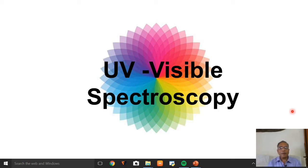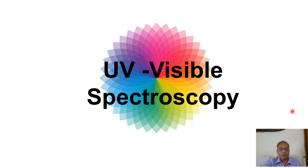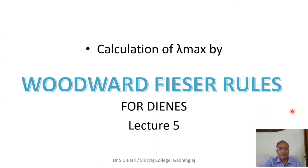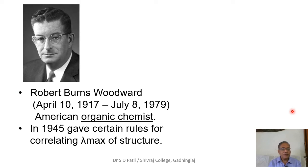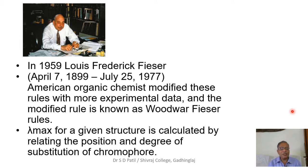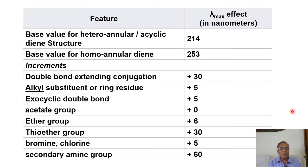Good morning, welcome back to this problem solving session on UV spectroscopy. From last lecture, we are considering Woodward-Fieser rules for calculation of lambda max values in the case of dienes. Robert Woodward and Louis Fieser proposed some empirical rules for theoretical calculation of expected lambda max values for organic compounds. After several experimentations, observations, and calculations, they assigned these numerical values for diene systems.